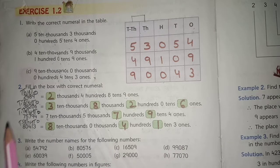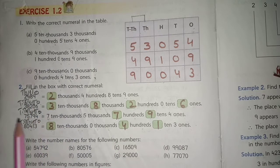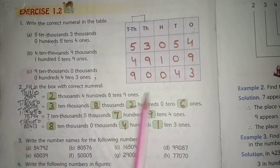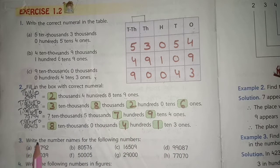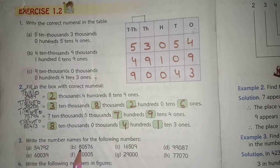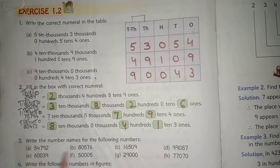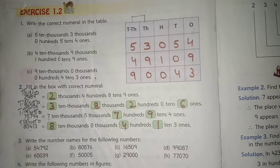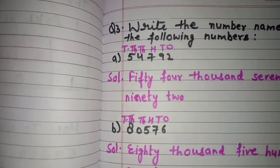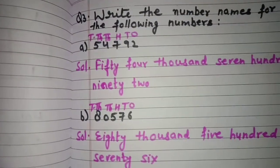So we have to write these numerals — we have to fill the boxes with the correct numeral. Now next is question number 3: write the number names for the following numbers. Here numbers are given and we have to write their number names. So let's do it one by one.